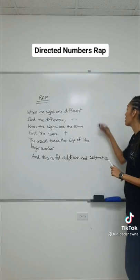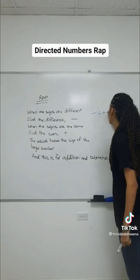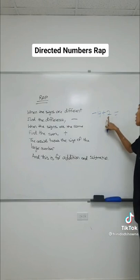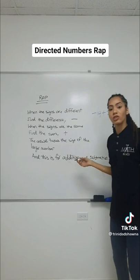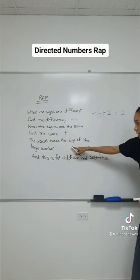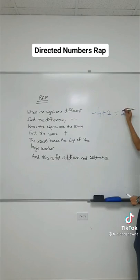So, negative 4 plus 2 — our first example. When the signs are different, we find the difference. The signs are different here, as we can see. So we find the difference. What's the difference between 4 and 2? 2 — correct. And the answer always takes the sign from the larger number. So you go by the larger number and you steal his sign, and his sign is a negative. So your answer is negative 2. Let's try another one.